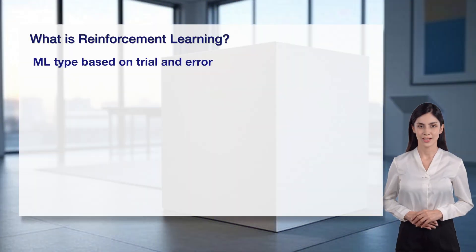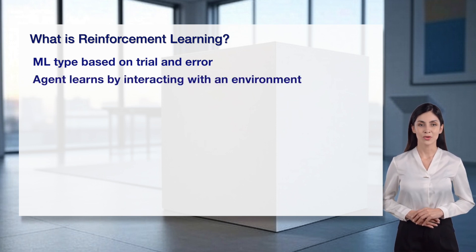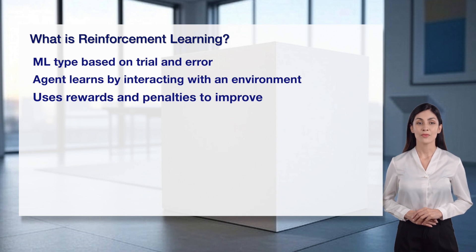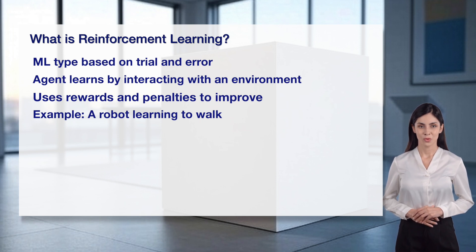Reinforcement learning is a type of machine learning where an agent learns through trial and error. The agent interacts with an environment, making decisions and taking actions. It uses rewards for good actions and penalties for bad ones to improve its behavior over time. For example, a robot might learn to walk by trying different movements and getting rewarded for steps forward — it's like training a pet with treats to encourage the right behavior.